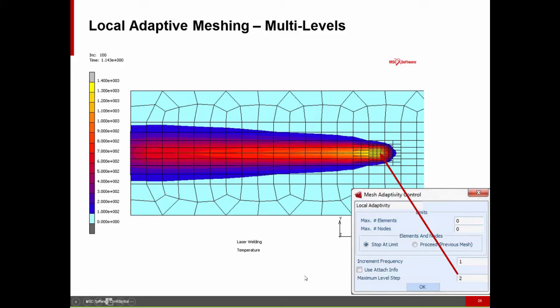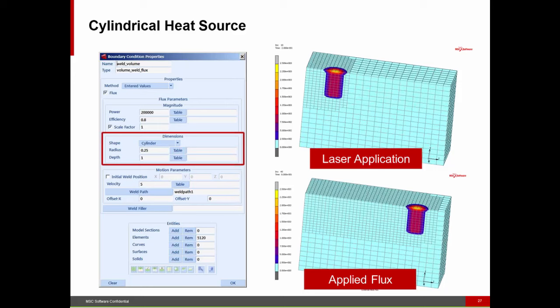The last thing about adaptive meshing is a powerful new capability that allows the program to do multiple levels of adaptive meshing in one increment. Before, if you failed a certain criteria, you refined the mesh, but if you still failed after refining, you'd have to wait until the next increment. Now we can do multiple levels in one shot — going from elements of one size to smaller and then to the finest level in the regions with the highest temperature and highest gradients.